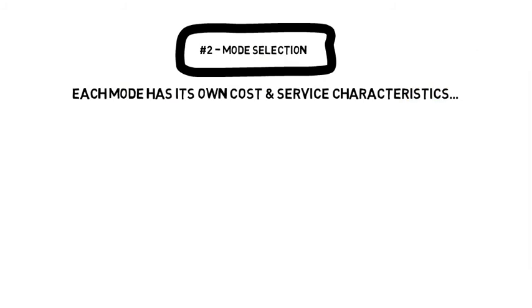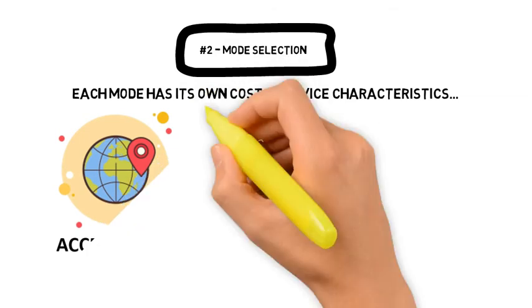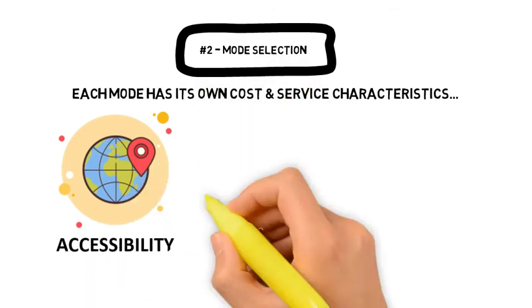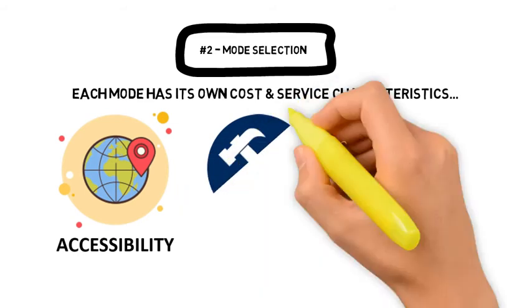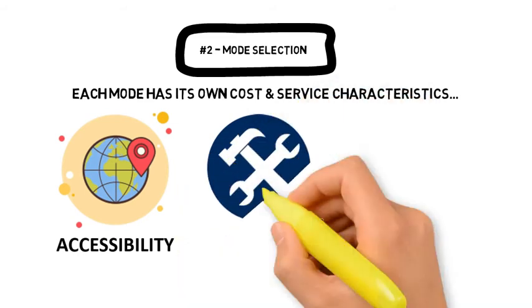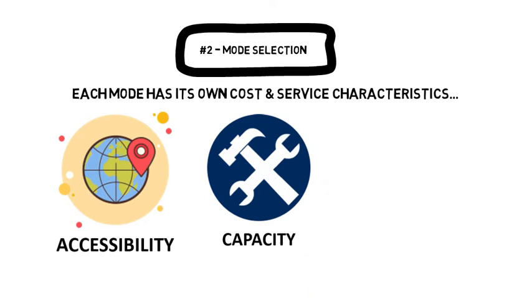Next, let's revisit mode selection in greater detail. The first and foremost consideration is accessibility — the ability of the mode to provide transport service between a specific origin and destination. A landlocked country will not be able to utilize shipping directly, and a mountainous area with no airport will not be able to utilize air mode. Secondly, we consider capacity: does a particular mode have the ability to accommodate the volume required and provide the handling necessary? Planes are inherently unsuitable to handle large volumes of liquid commodities such as petroleum.